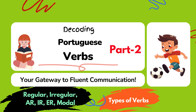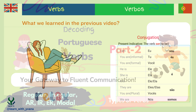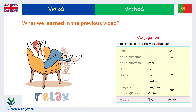Decoding Portuguese verbs: your gateway to fluent communication, part 2 — types of verbs and their infinitive forms. Olá amigos, como estão! Hi friends, how are you? This video is the second part of the decoding Portuguese verb series. In the previous introduction video we learned what a verb is, how it tells the action in the statement, and how we conjugate it with the subject or pronoun.